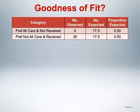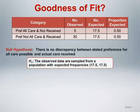This table and structure should look familiar. This is a one-way frequency table that can be analyzed using a chi-square goodness of fit test, which we discussed in the first section of this module. The appropriate null hypothesis is that there is no discrepancy between stated preference and actual care received. More specifically, thinking in terms of goodness of fit, we assume that the observed data are sampled from a population with equal expected frequencies for each category. Given that there are 35 subjects, expected cell counts under the null would be 17.5 subjects per cell.